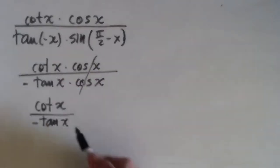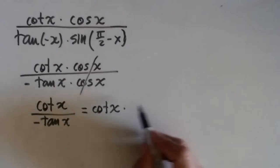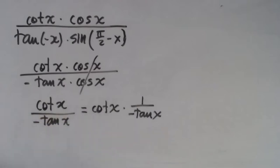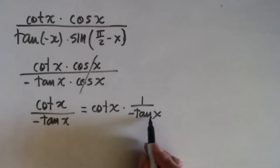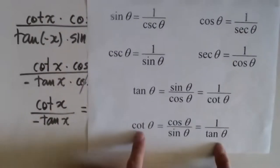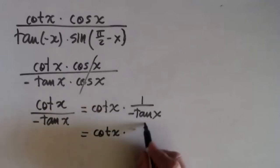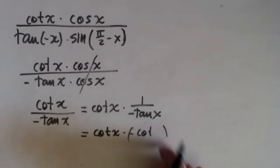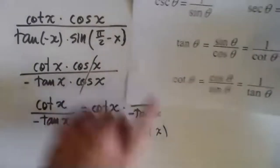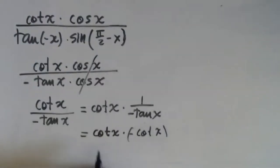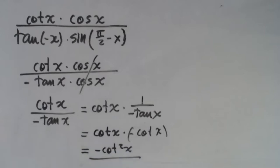Let me separate like fractions: cotangent x times one over negative tangent x. One over tangent is cotangent. So this is cotangent times one over negative cotangent — cotangent times cotangent is cotangent squared, positive times a negative is negative. So I have negative cotangent squared of x. That's my answer.